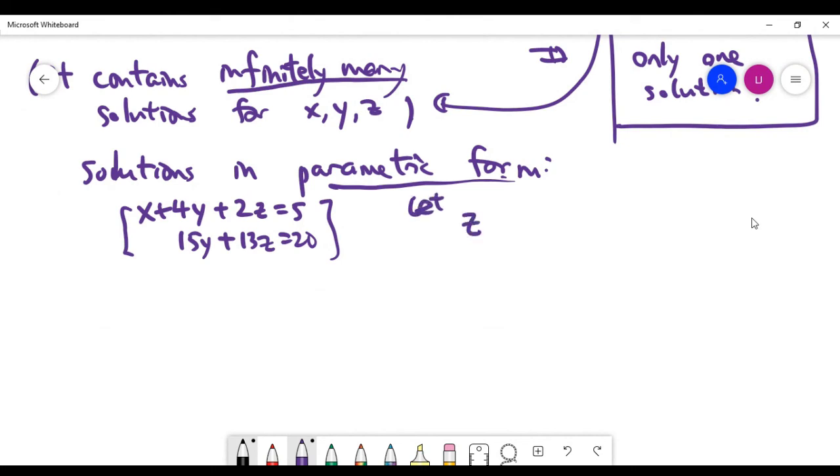Parametric form basically means that we have to use some parameter to represent all our solutions x, y, z. Let's say we can let z be t, and you are free to choose other variables, but I just by convention start with the last variable z. So in that case, in the second equation we actually have 15y plus 13t equals 20. And you have to do the job to transform the equation into the form where the left-hand side contains only y.